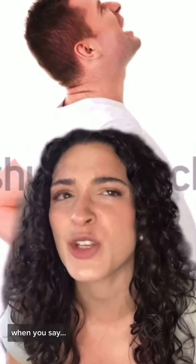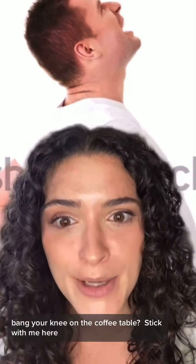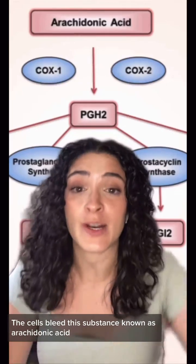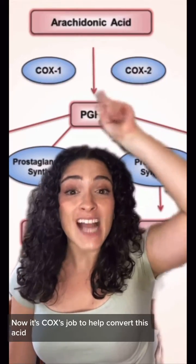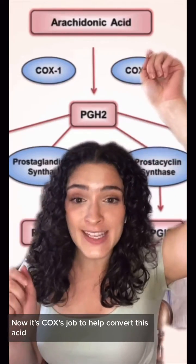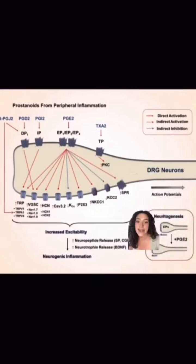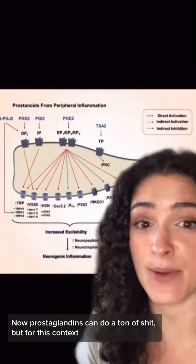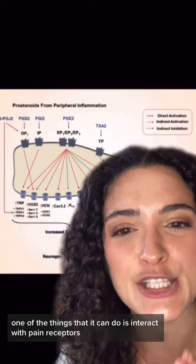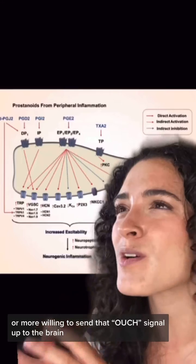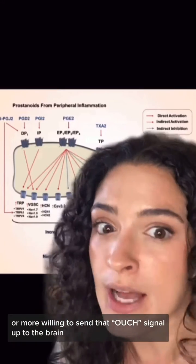But how does this inhibition dampen pain? Well, let's first talk about what happens on the cellular level when you, say, bang your knee on the coffee table. Stick with me here. Upon damage or irritation, the cells release this substance known as arachidonic acid. Now, it's COX's job to help convert this acid into a substance known as prostaglandin. Prostaglandins can do a ton of things, but in this context, one of the things they can do is interact with pain receptors and make them more sensitive, or more willing to send that ouch signal up to the brain.